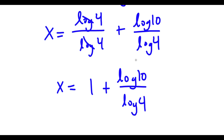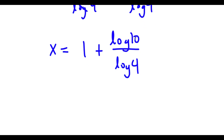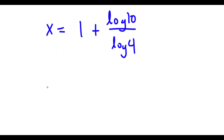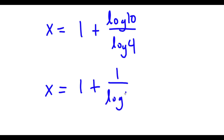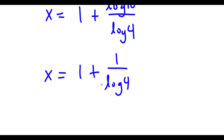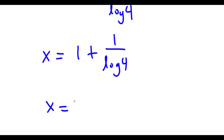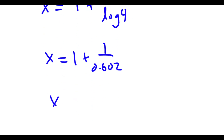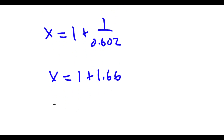Now log 10 is the same thing as 1. So now I have x is equal to 1 plus 1 over log 4. And log 4 is equal to 0.602, so now I have x is equal to 1 plus 1 over 0.602, which is equal to 1 plus 1.66, meaning x is equal to 2.66.